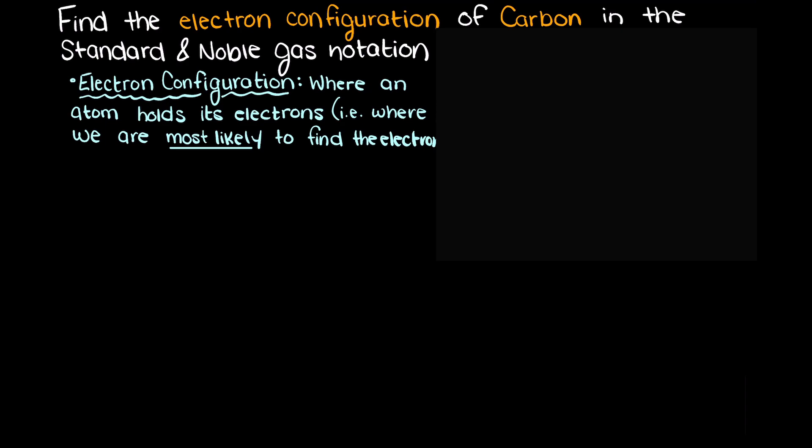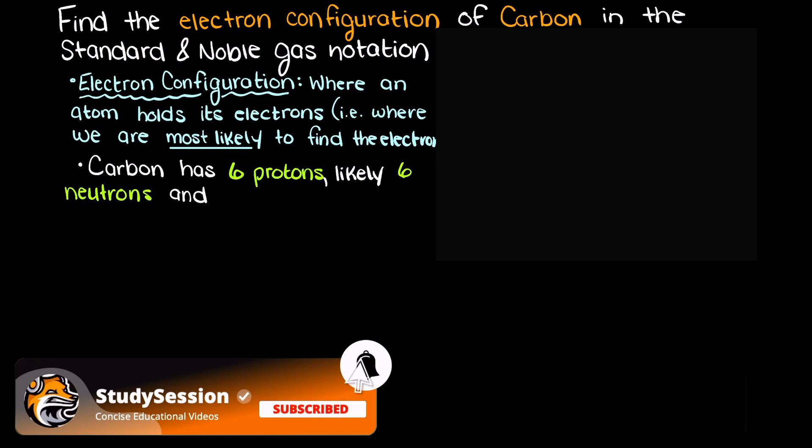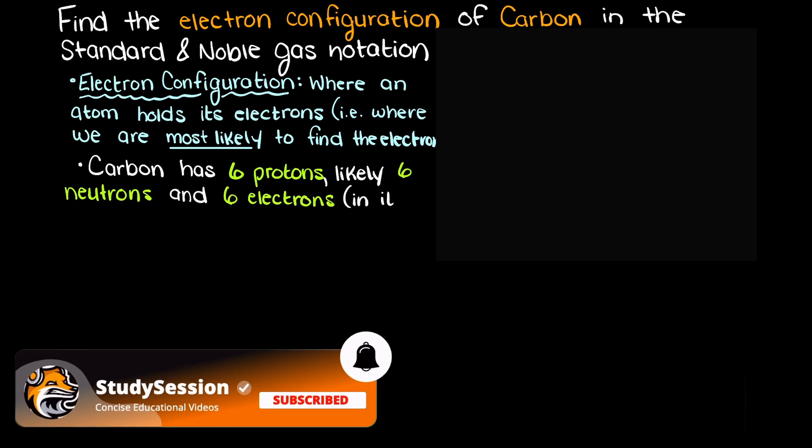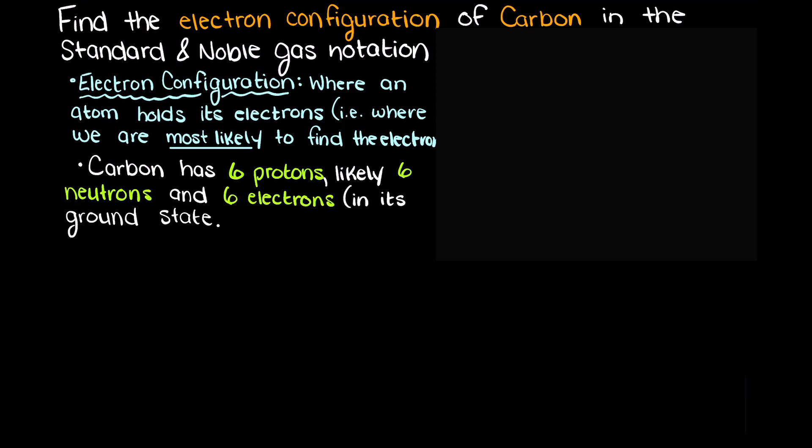This is the same as its atomic number. Looking this up, we find that carbon is number 6 on our periodic table, meaning in a neutral state with no positive or negative charge, our carbon atom will have 6 protons, likely 6 neutrons, and 6 electrons surrounding the nucleus.